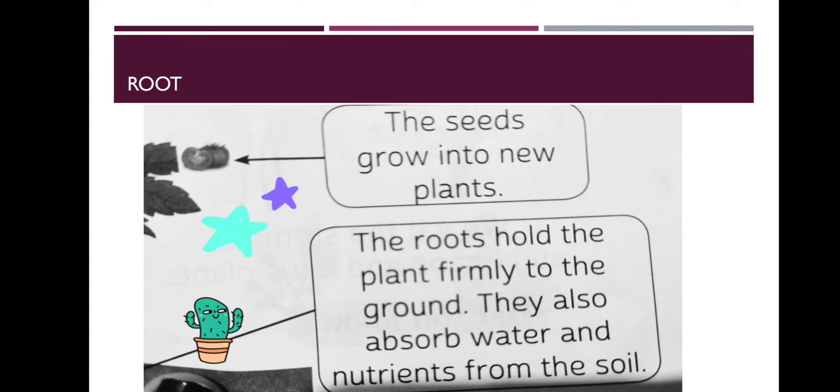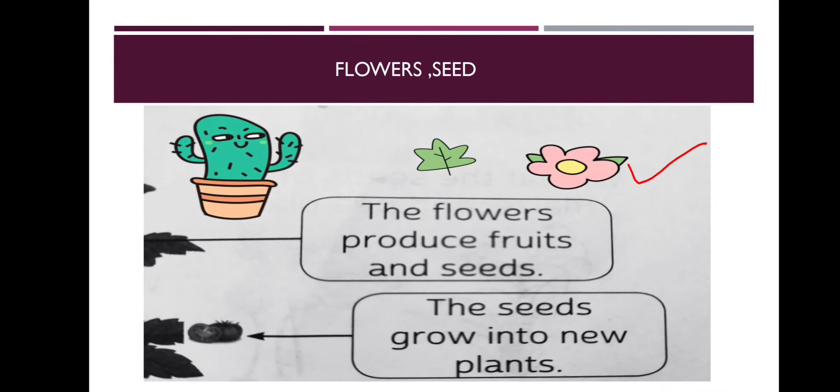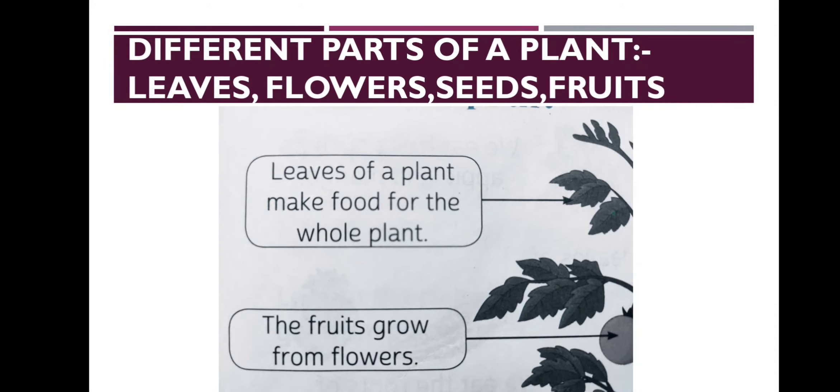Seeds help new plants to grow. Flowers help to generate seeds and fruits that we eat. And on the other hand, leaves of a plant make food for the whole plant. So the leaves are just like they play a role of cook.